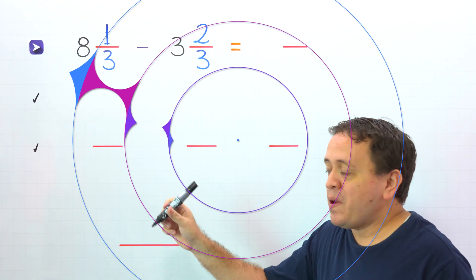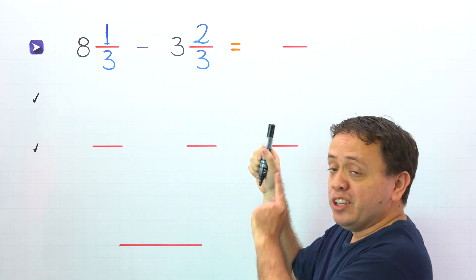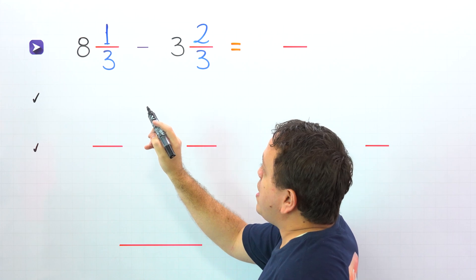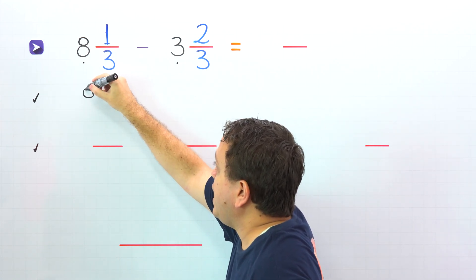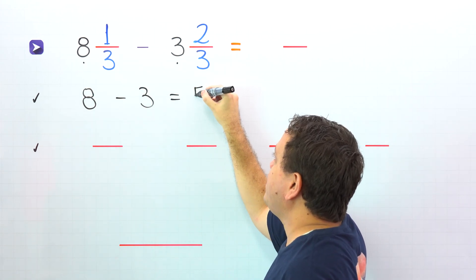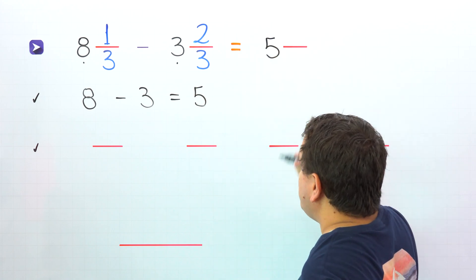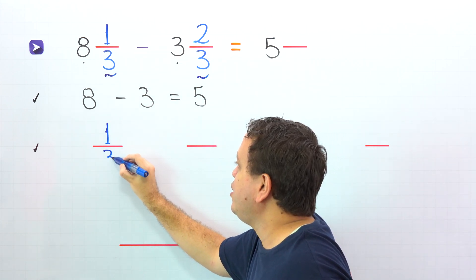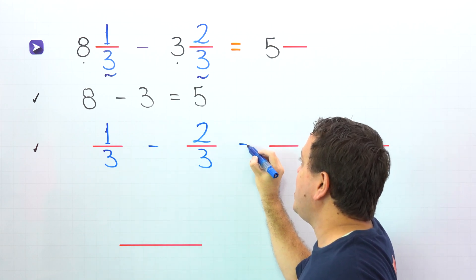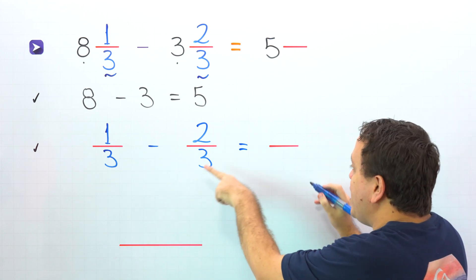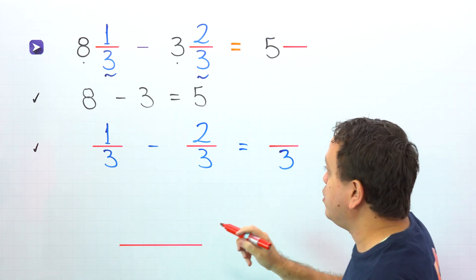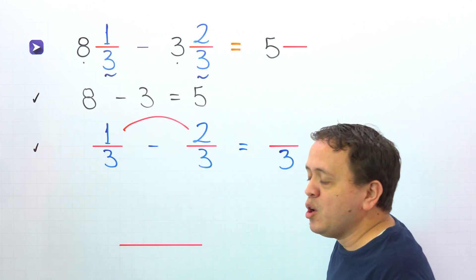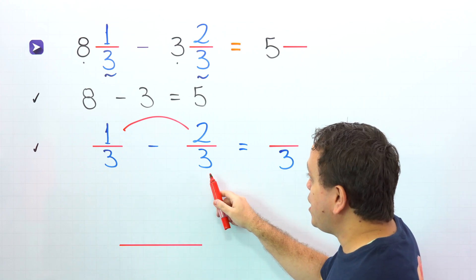Let's move on to the last example. In this problem, we need to subtract eight and one-third minus three and two-thirds. This problem is different from the previous ones. Despite that, we will try to follow the same steps. So we start by subtracting the whole numbers — eight and three. Eight minus three gives us five. We can write five in the answer. We continue by subtracting the fractions. The fractions are one-third and also two-thirds. So we put one-third minus two-thirds. We subtract the numerators: one minus two. Hold on — we cannot subtract two from one, because two is greater than one. We got in trouble here, and the reason is that the second fraction is greater than the first fraction.